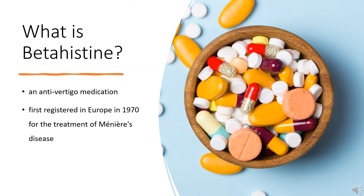Beta-histine, sold under the brand name SERC among others, is an anti-vertigo medication. It is commonly prescribed for balance disorders or to alleviate vertigo symptoms. It was first registered in Europe in 1970 for the treatment of Meniere's disease, but current evidence does not support its efficacy in treating it.